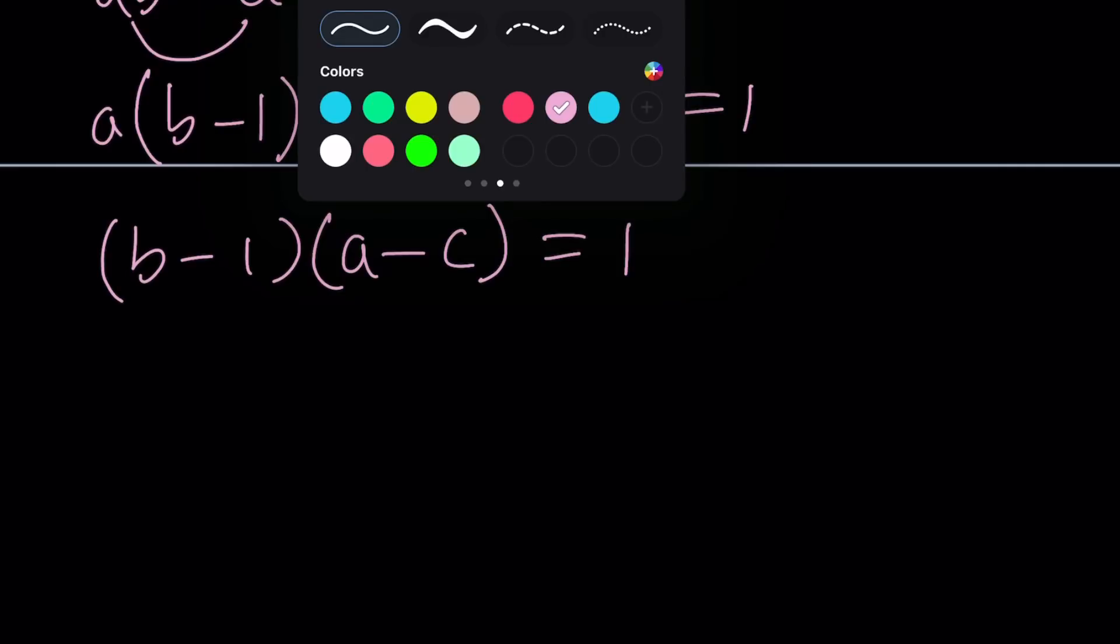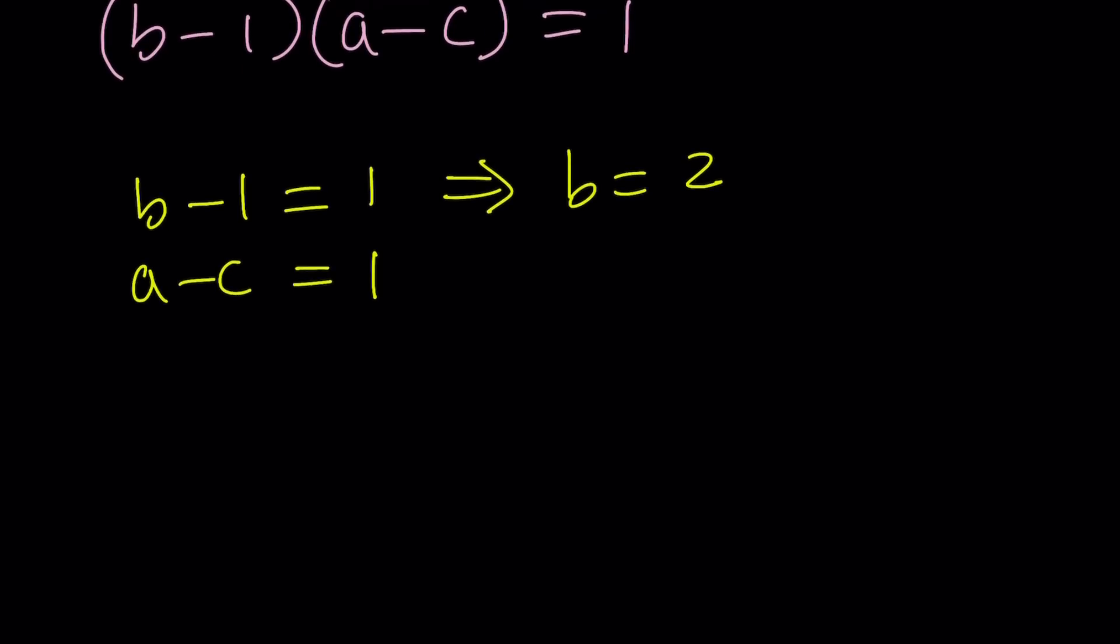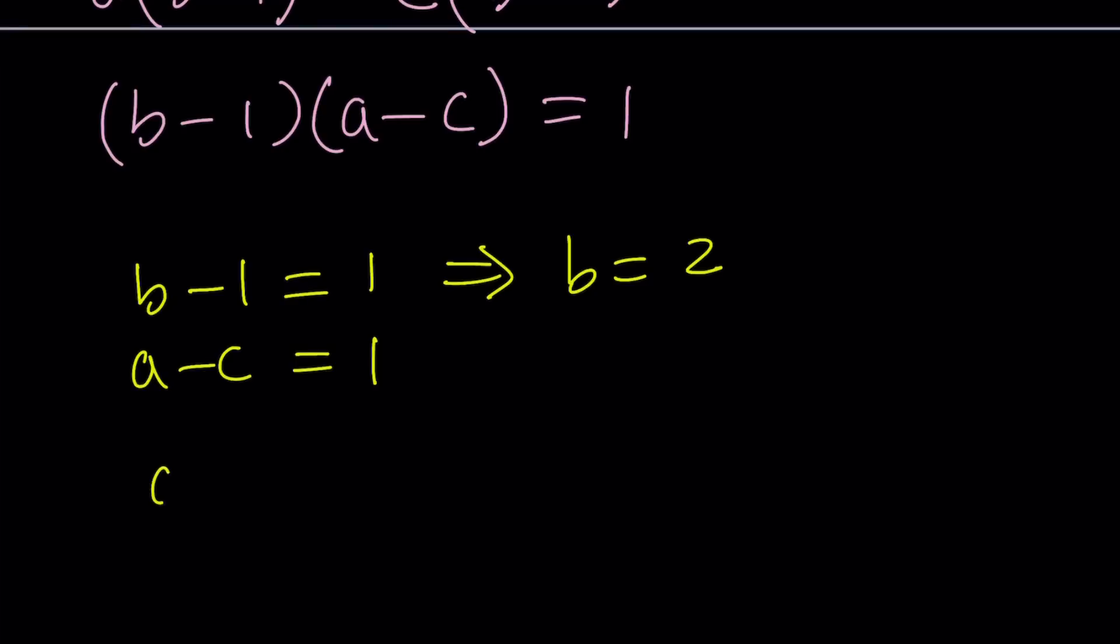What are those cases? First case is when B minus 1 is equal to 1 and A minus C is equal to 1. You've got to remember, A, B, C are integers. So, the first equation easily gives us B equals 2. But the second equation only gives us the relationship between A and C. Well, remember, you have the original equation still. They still exist. So, let's consider the first equation. AB plus C is 2024.